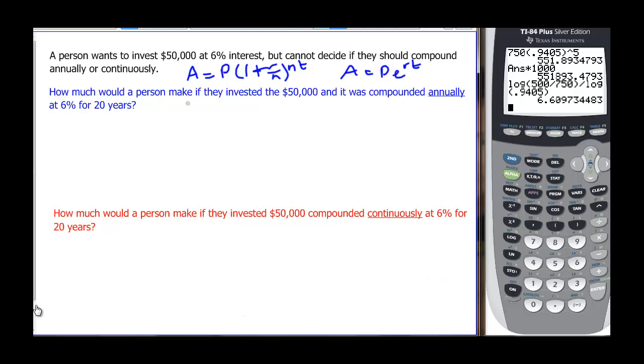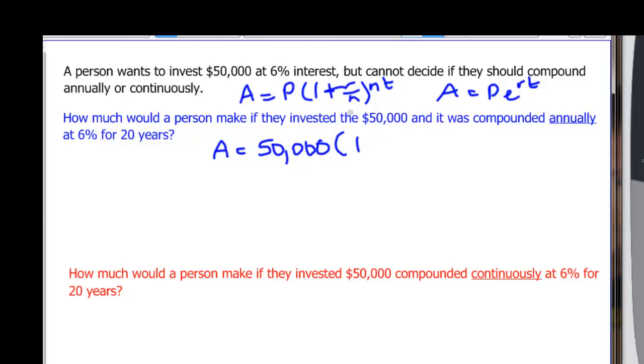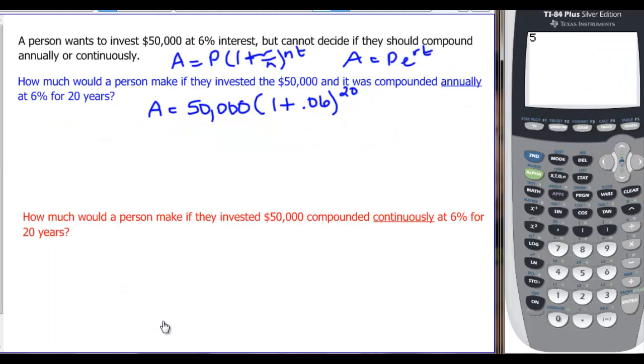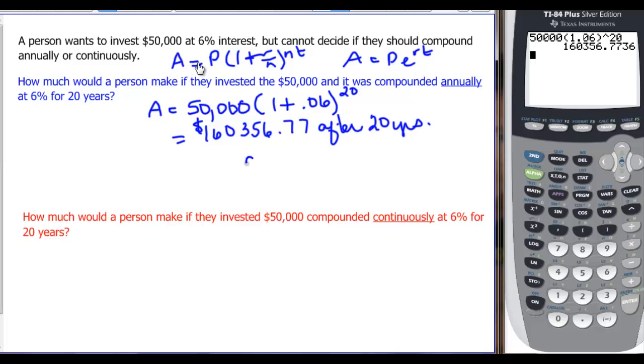How much would they make if they invested annually? We have A being equal to 50,000 that they invested. That's the P times 1, and our rate or N is 1. So we're going to just say 1 plus the rate, 0.06 because we're just going to be dividing by 1 to the NT. But it's really just a 20 because it's 20 times 1. When we take that to our calculator, we get 50,000 parenthesis 1.06 when we add those two, carat 20. So in 20 years, they're going to have $160,356.77 after 20 years at 6% annual interest.